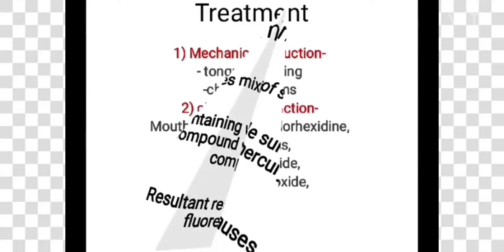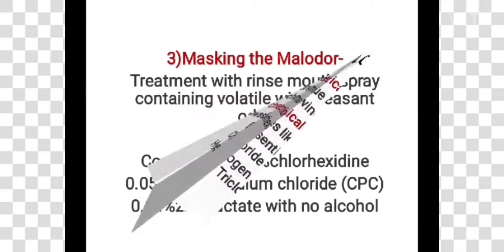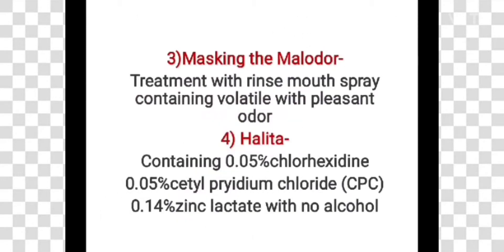Treatment for halitosis includes: first, mechanical reduction by tongue cleaning and chewing gums; second, chemical reduction using mouthwashes like chlorhexidine, essential oils, chloride dioxide, hydrogen peroxide, and triclosan; third, masking the odor with mouth rinse sprays containing pleasant odors. Halita contains 0.05% chlorhexidine, 0.05% cetylpyridinium chloride (CPC), and 0.14% zinc lactate with no alcohol.